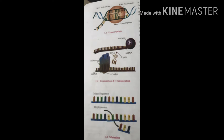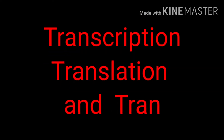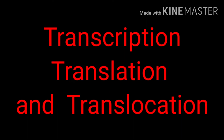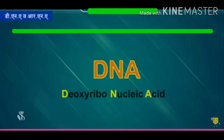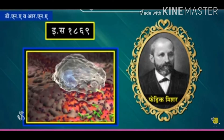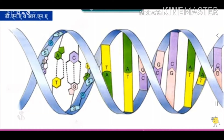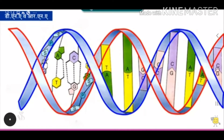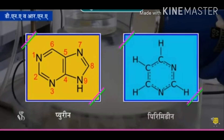Our next topic is transcription, translation, and translocation. With the help of RNA, the genes present in the form of DNA participate in the functioning of the cell and control the structure and functioning of the body. Information about protein synthesis is stored in DNA, and synthesis of appropriate proteins as per requirement is necessary for the body. These proteins are synthesized by DNA through the RNA.